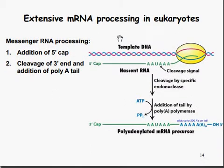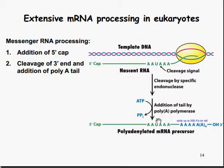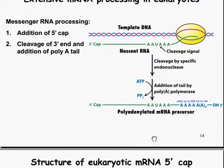Extensive mRNA processing in eukaryotes involves the addition of the 5' cap, the cleavage of the 3' end, and the addition of the poly-A tail. The nascent RNA receives its 5' cap, then receives a cleavage signal at the point at which it needs to be ended. The nascent RNA is cleaved by a specific endonuclease, ATP is applied, and phosphorylation causes the addition of the poly-A polymerase tail. This gives you a polyadenylated mRNA precursor. The poly-A tail can add up to 200 A's on the tail.